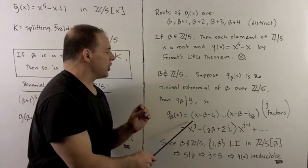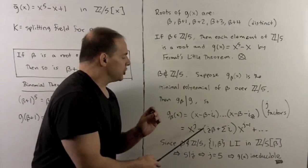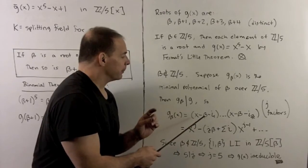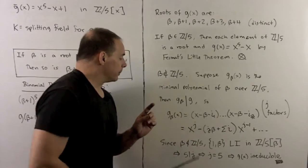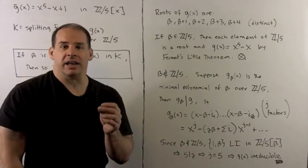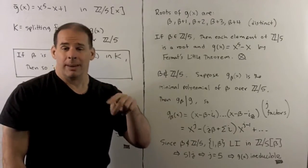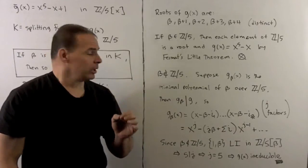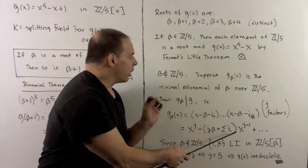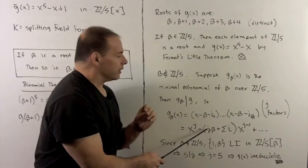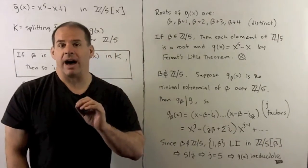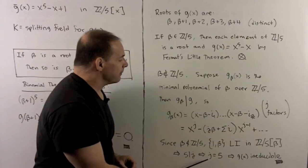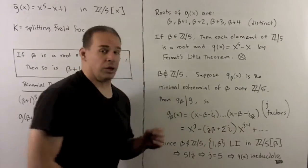Now, that's going to be a problem. Because beta is not in Z mod five. When we adjoin beta, one and beta will be linearly independent. So the only way that this can go to zero is if j is divided by five. So in this case, that means j has to be precisely equal to five. And that means that g is irreducible.